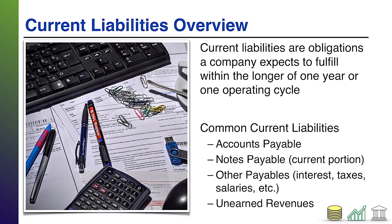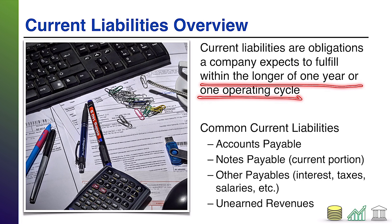It is the first video, so before we get into accounts payable, let's take a moment and ask ourselves: what exactly is a liability, and what exactly is a current liability? Liabilities are obligations — an obligation that a company needs to fulfill that they owe to another party. That obligation could be monetary or it could be in the form of some action. Current liabilities specifically are obligations that will be fulfilled within one year or one operating cycle. For simplicity in an introductory course, we're just going to leave it at one year as our cutoff of whether you're current or non-current.